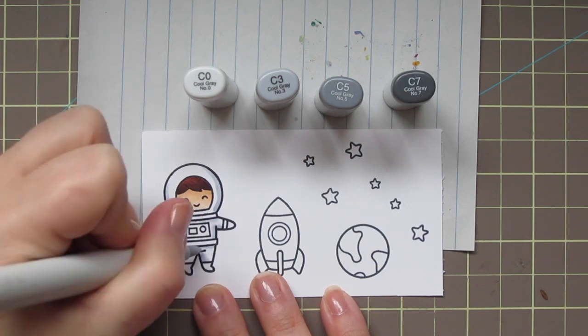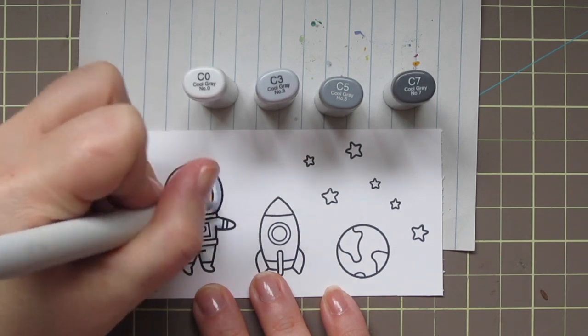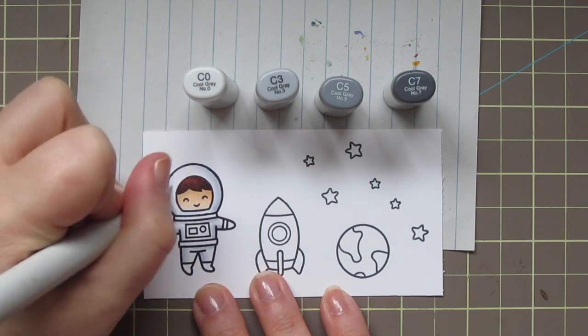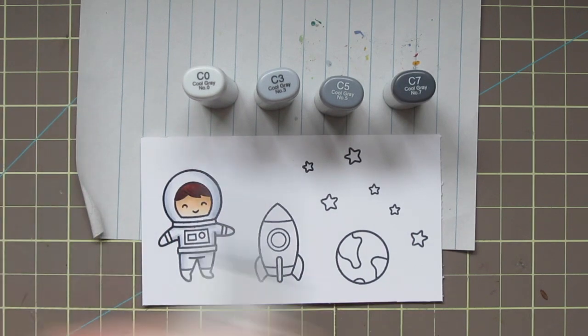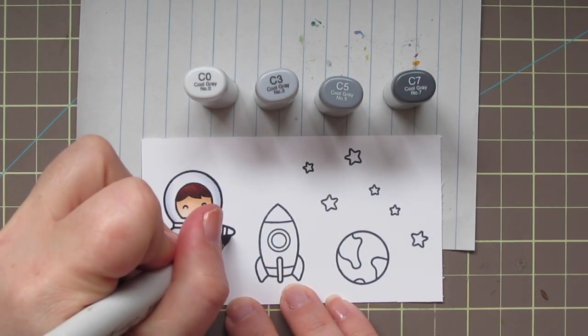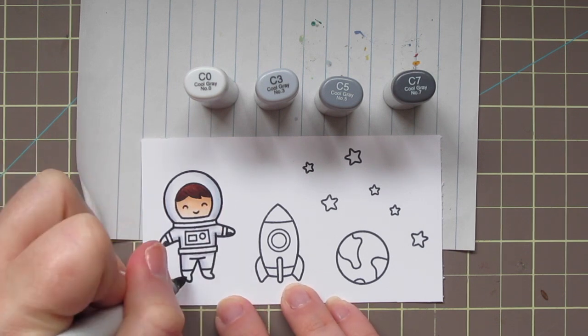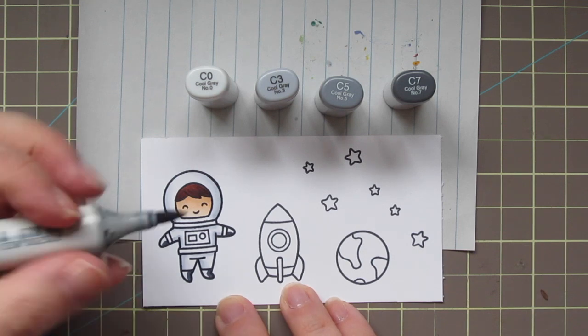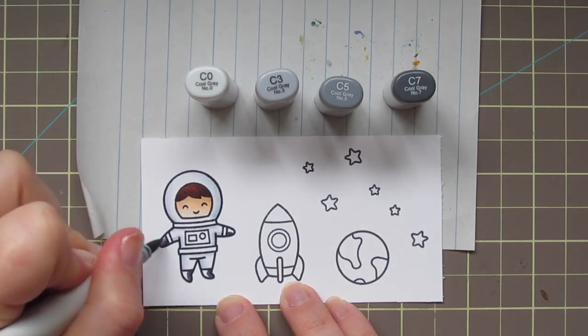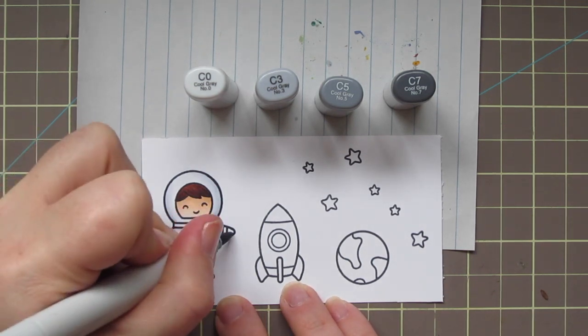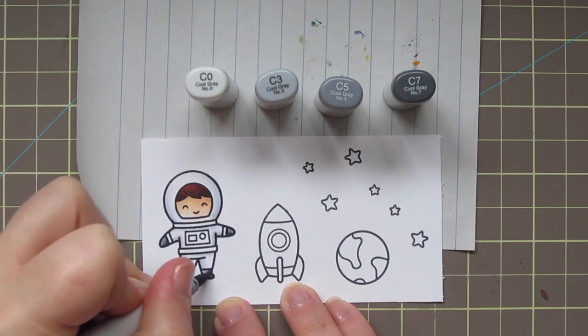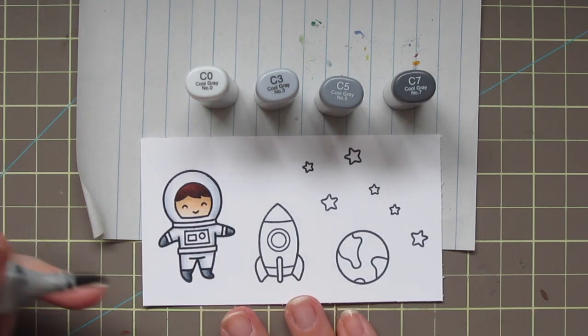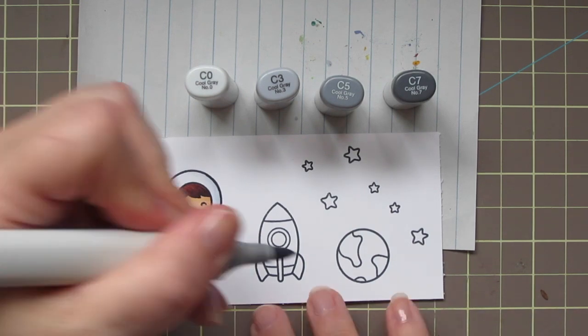You can see already that he's starting to get a more rounded appearance and kind of lifting off the page a bit. So I'm just blending out that C3 with the C0 and then I'll leave quite a bit of white space on there as well because I do want it to look white. I'm adding the shadows on his glove and boots with the C7 and then just blending those out with the C5. They're real small so you don't need to work too hard on those to get them to blend together nicely.